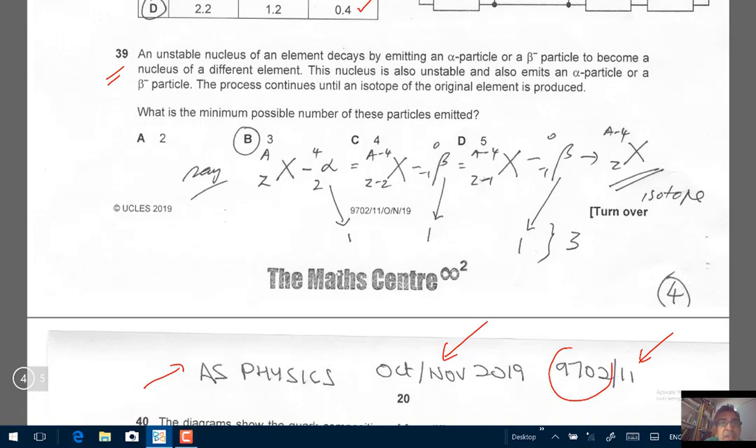Let's read the question. An unstable nucleus of an element decays by emitting an alpha particle or a beta negative particle, an electron, to become a nucleus of a different element.